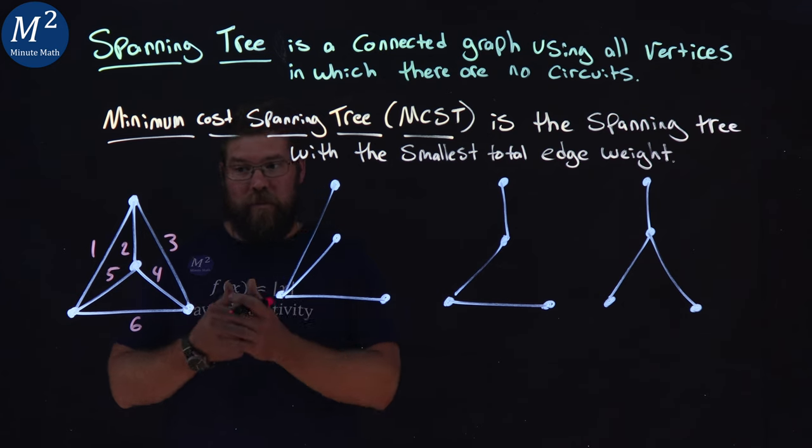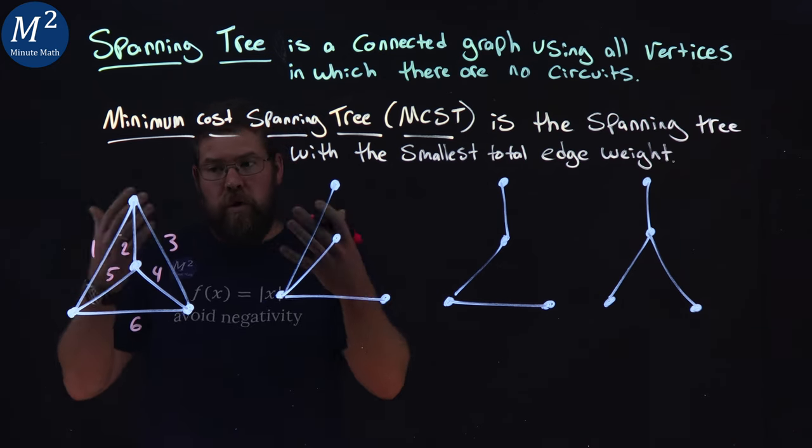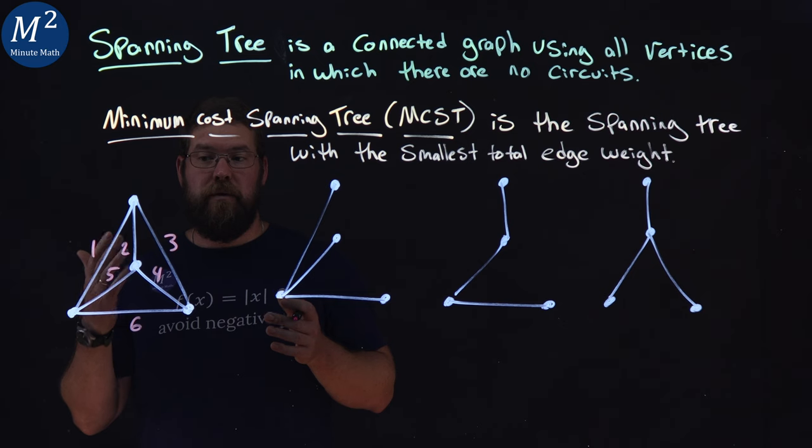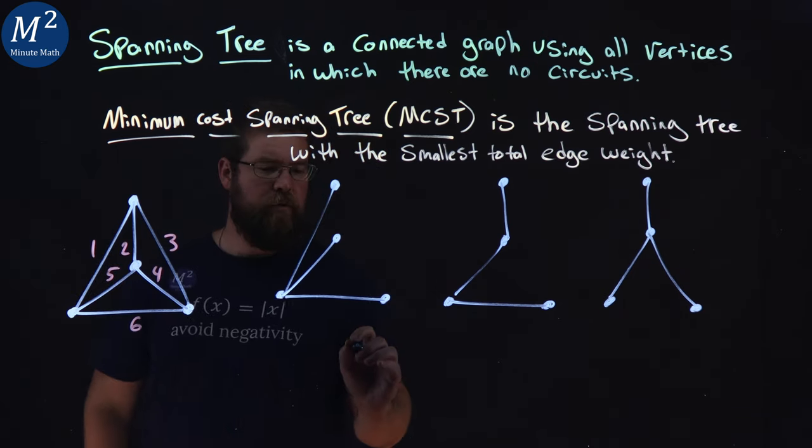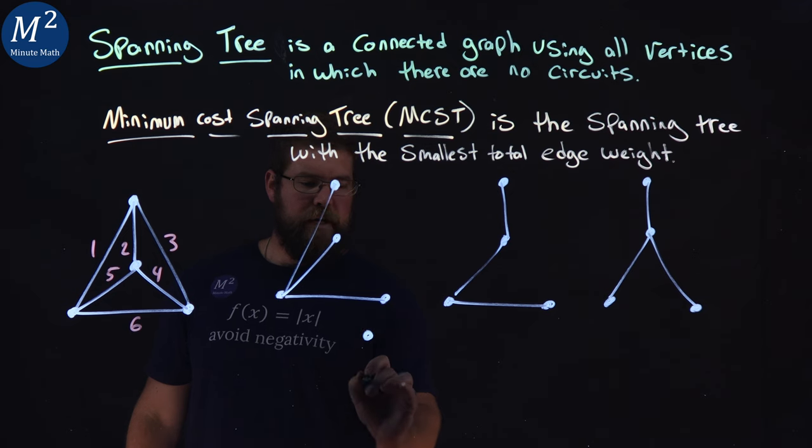So we want to find the spanning tree that has the lowest total weight that hits every single edge. Well, if I were to do that, I would create a spanning tree. So we have all of our vertexes right here.